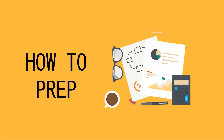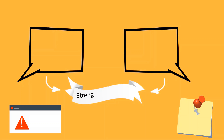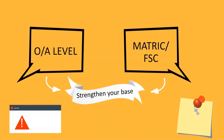You might be thinking now, how do we actually prep for this exam? Well, my suggestion would be to strengthen your base. It does not really matter if you are from a Matric/FSC background or an O/A level background. But the one thing I do suggest to people from all backgrounds is attempting the SAT 2. If you do not have enough time to go over the content of the SAT 2, then at least do its questions. However, if you are from an A level background, you don't really need to do FSC, and if you are from an FSC background, you don't really need to do A levels.